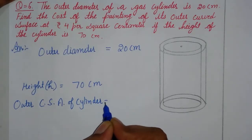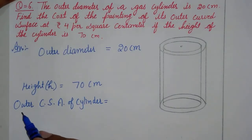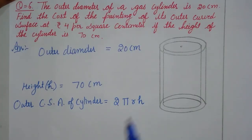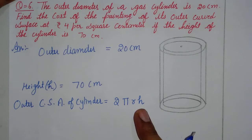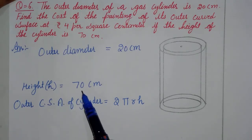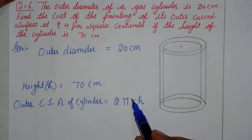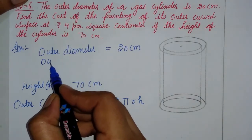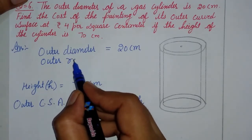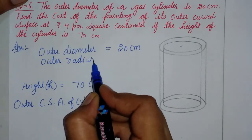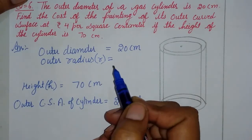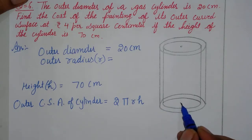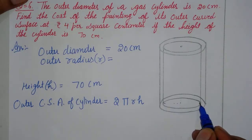Now in a cylinder, the curved surface area formula — whether inner or outer — is 2πRH. You have H, the height, which is 70 centimeters, but you are not given R directly. So first of all we need to find the radius. The outer diameter is given, so I will find the outer radius. When you have a circle, the diameter goes through the center of the circle.